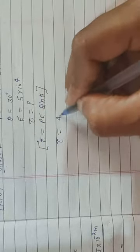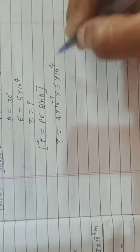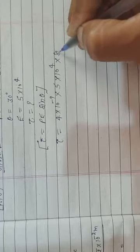Tau. What is the value of P? 4 into 10 to the power minus 9. E value is 5 into 10 to the power 4, and sin 30.